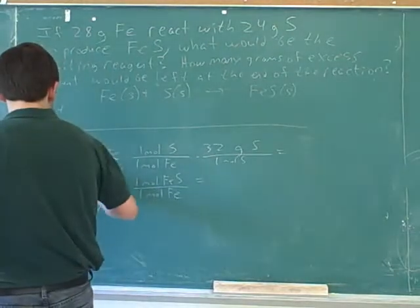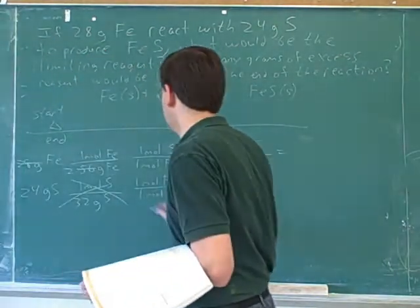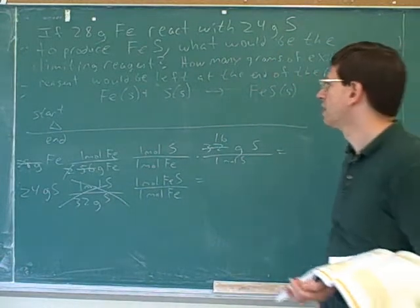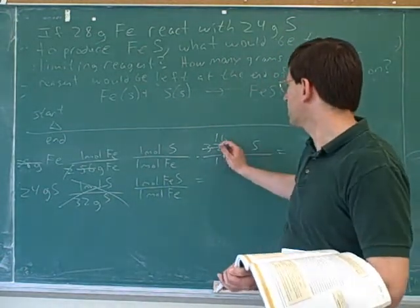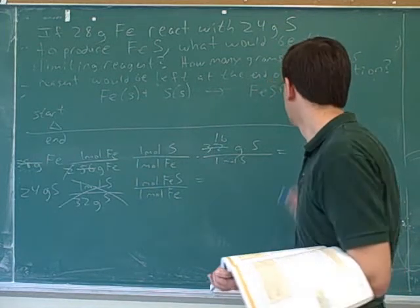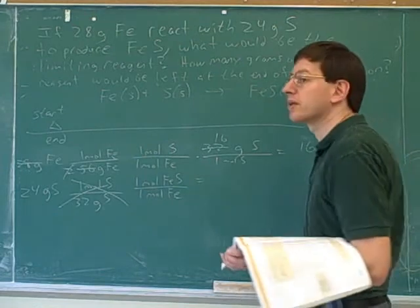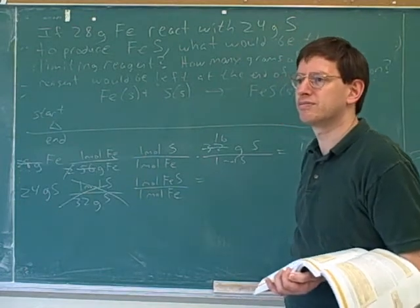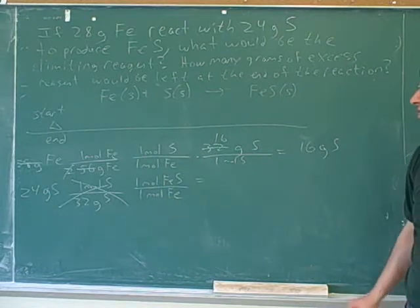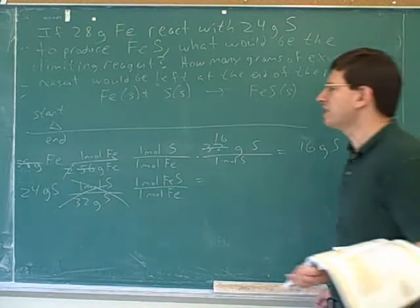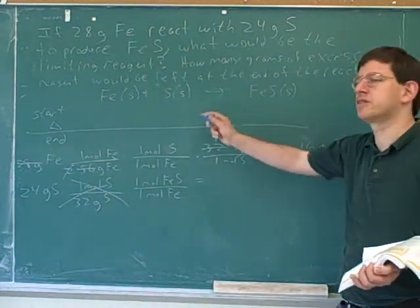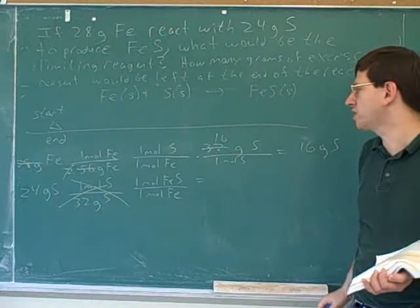Now, 28 goes into 56 twice. Correct. And 2 goes into 32 sixteen times. Now, where does this number go in our table? It goes in the n column. Pardon? In the n. Does it?